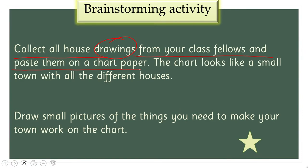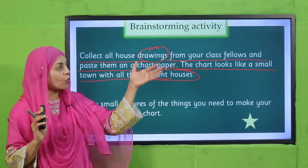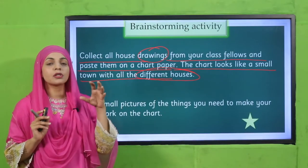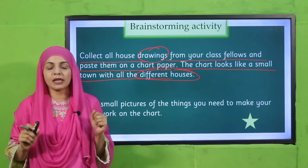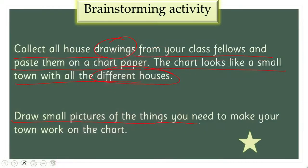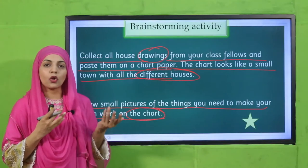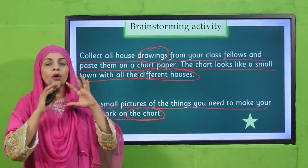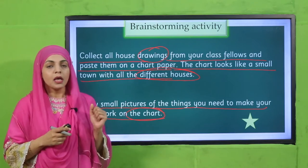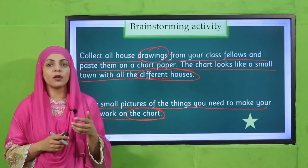Now collect all the house drawings from your class fellows and paste them on a chart paper so it looks like a small town. Then draw small pictures of the things you need to make your town work — like markets, roads, schools, and hospitals — and add them to the chart. This is how your chart paper will look like a proper town. Complete this task with the help of your class fellows, pause the video, and finish it.